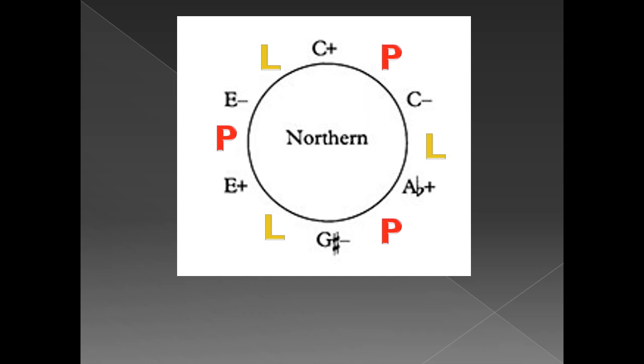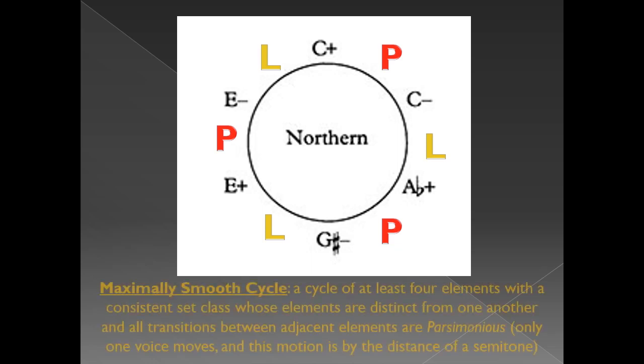Because every clang in the hexatonic cycle is related to its neighbors by moving a single voice by a semitone, the hexatonic cycle is a type of maximally smooth cycle. It has at least four distinct elements of the same set class whose transformations between elements are parsimonious or maximally smooth. We refer to the triads found directly across the circle from one another as hexatonic poles. Hexatonic poles share no common tones.